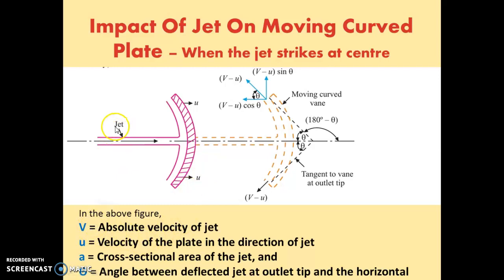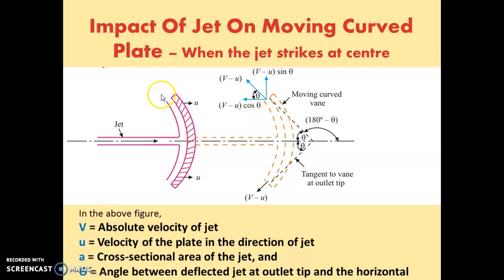From the figure: v is the absolute velocity of the jet traveling in the x-direction. u is the velocity of the plate in the direction of the jet — that is, the plate travels in the same direction as the jet. a is the cross-sectional area of the jet. Theta is the angle — after getting deflected, the jet travels along the plate and is thrown outside, and the direction of that exit velocity makes an angle theta with the horizontal.